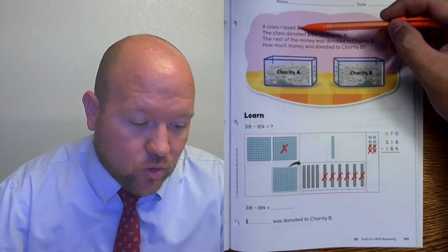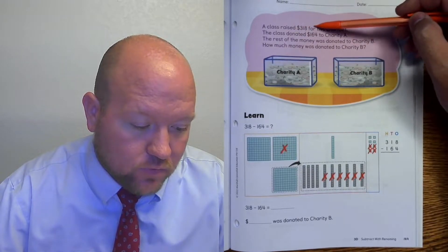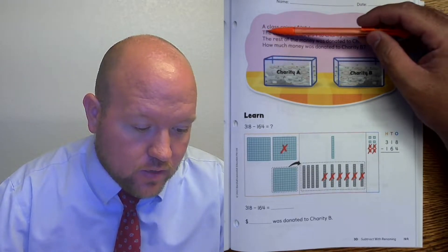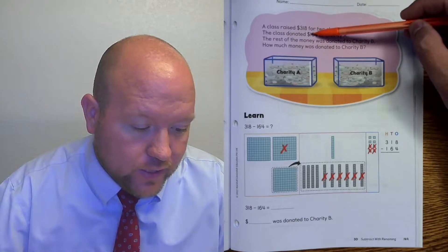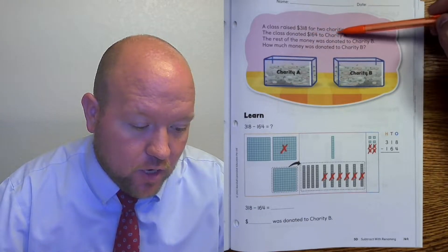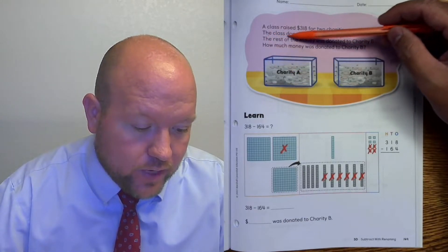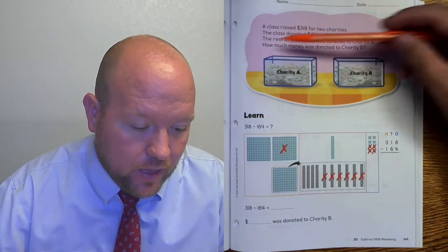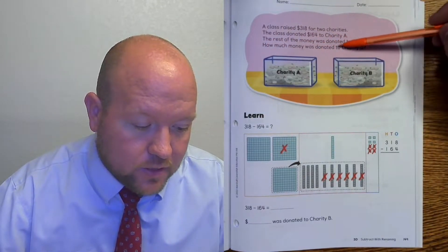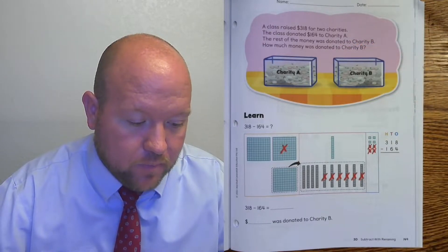A class raised $318 for two charities. The class raised $164 to charity A. The rest of the money was donated to charity B. How much money was raised to charity B?